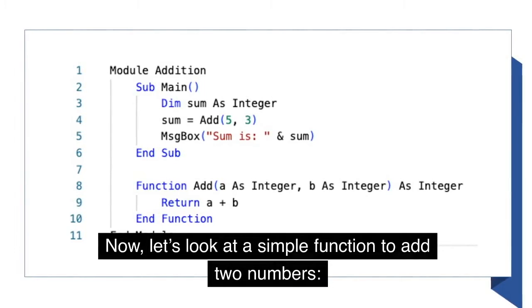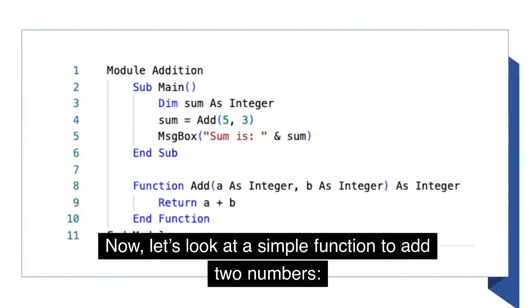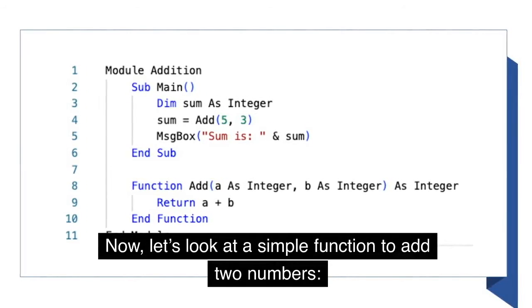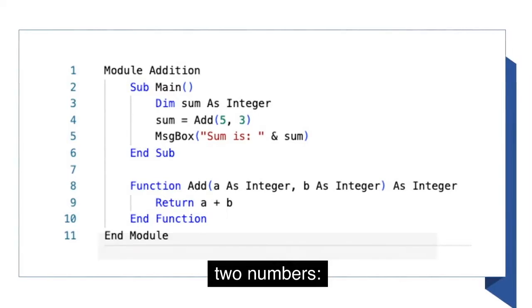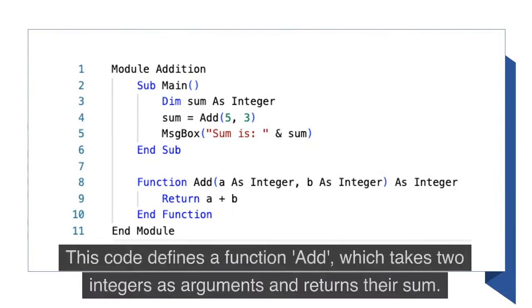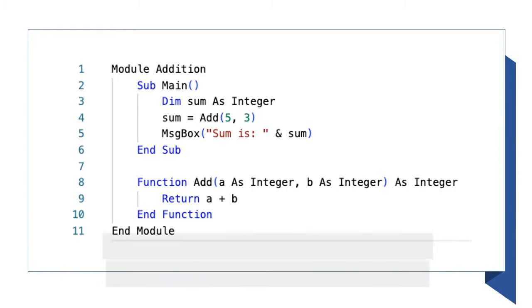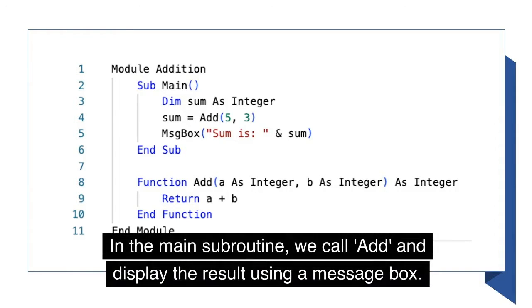Now let's look at a simple function to add two numbers. This code defines a function Add which takes two integers as arguments and returns their sum. In the main subroutine, we call Add and display the result using a message box.